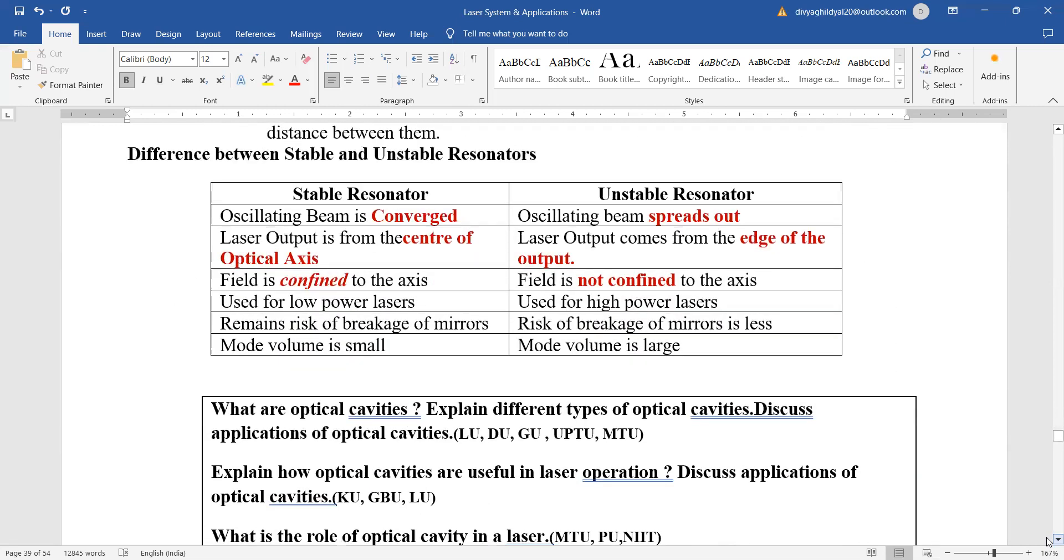Comparison between stable and unstable resonator. Many times it has been asked. Stable resonator, the oscillating beam is converged. Unstable resonator, oscillating beam spreads out. Laser output is from the center of optical axis. Laser output comes from the edge of the output. Field is confined to the axis in stable resonator. Field is not confined to the axis in unstable resonator.